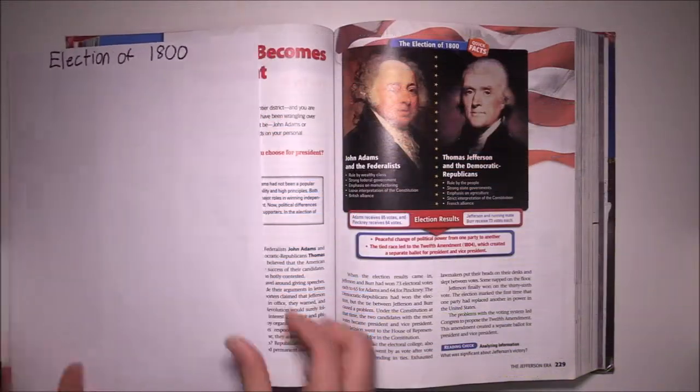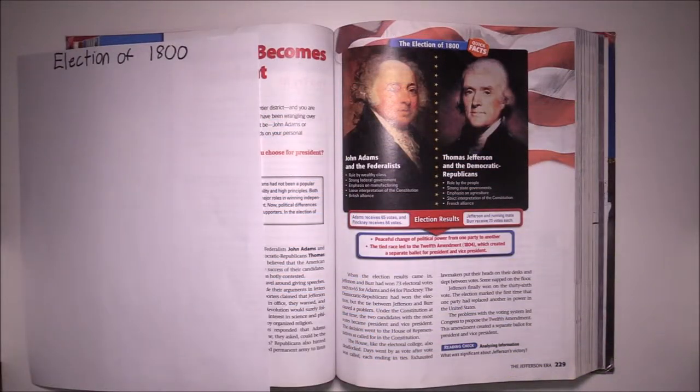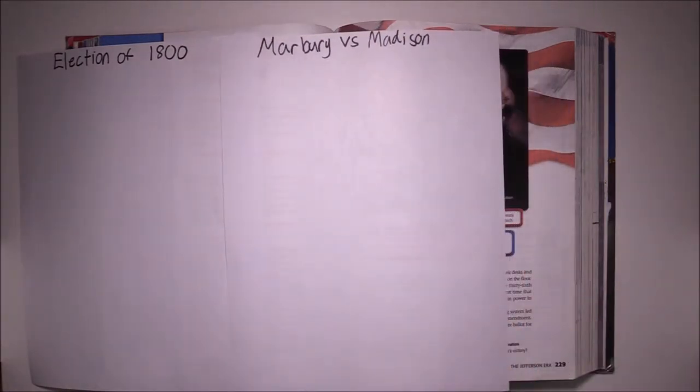In section 1 of this chapter, we will cover the election of 1800, Marbury vs. Madison, and judicial review.